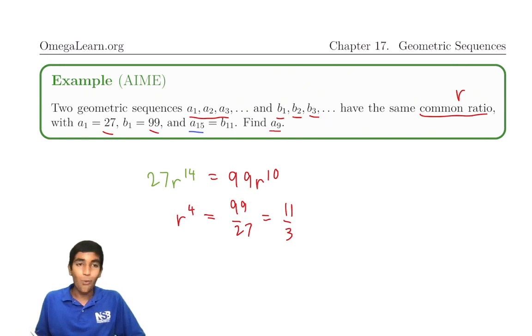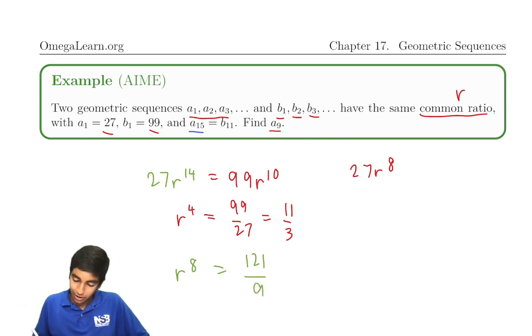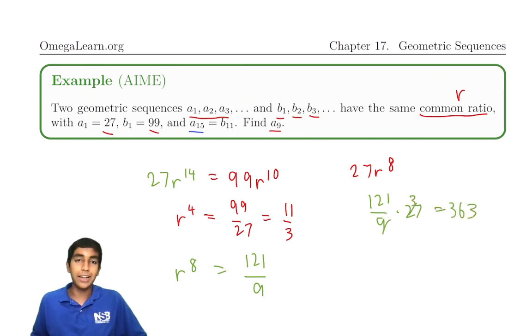We know r to the 4 is 11 thirds. We want a of 9. What is a of 9? The first term is 27, and the common ratio is r, so it's 27r to the 8th. We know r to the 4, so we can just square r to the 4. r to the 8th is 121 over 9 times 27. Cancel, cancel, 3 equals 363. Simple problem. We just plug it into the formula and solve the equation.